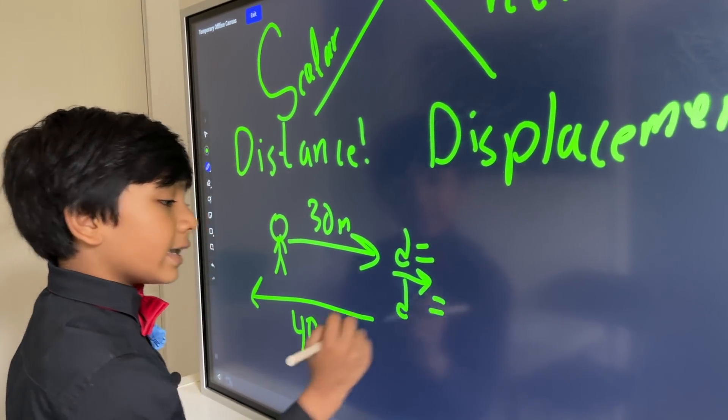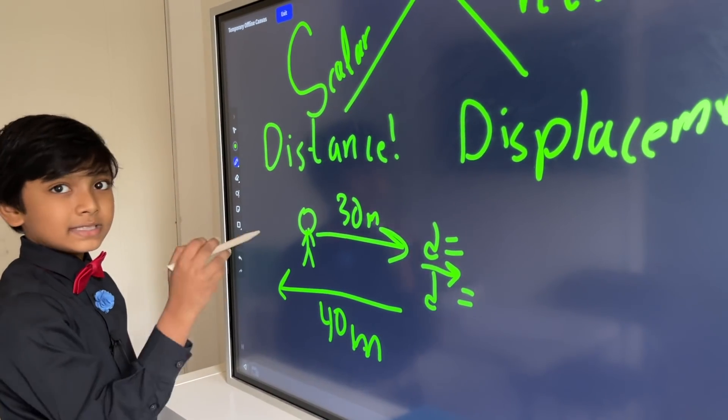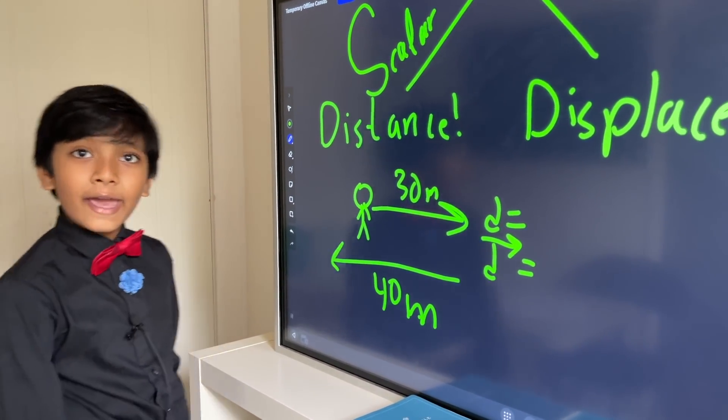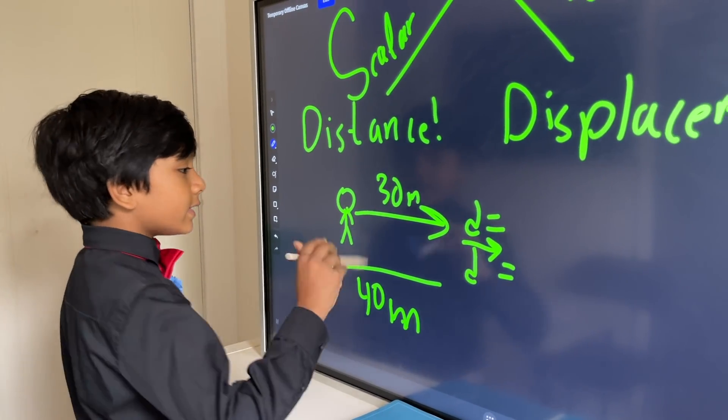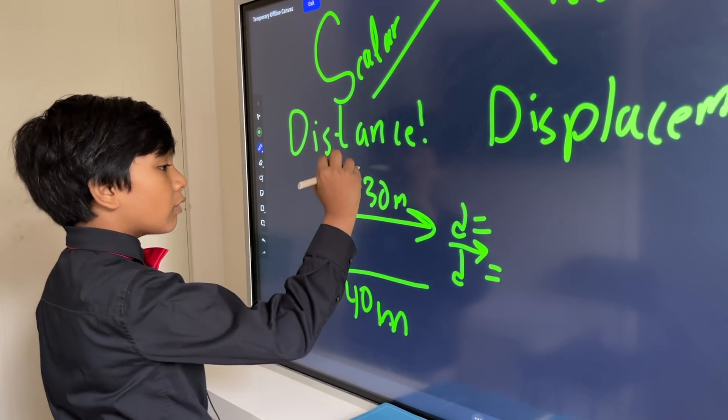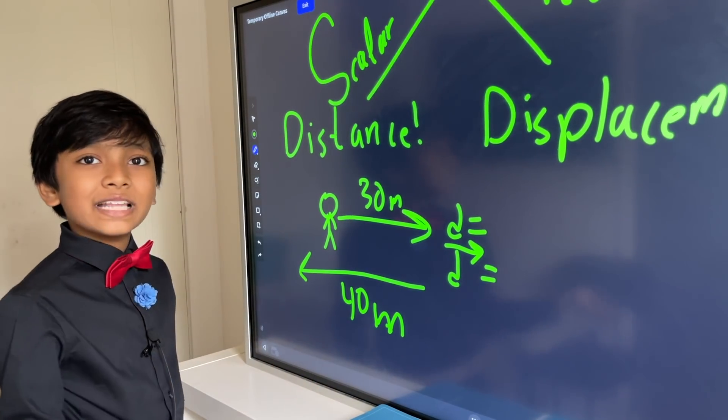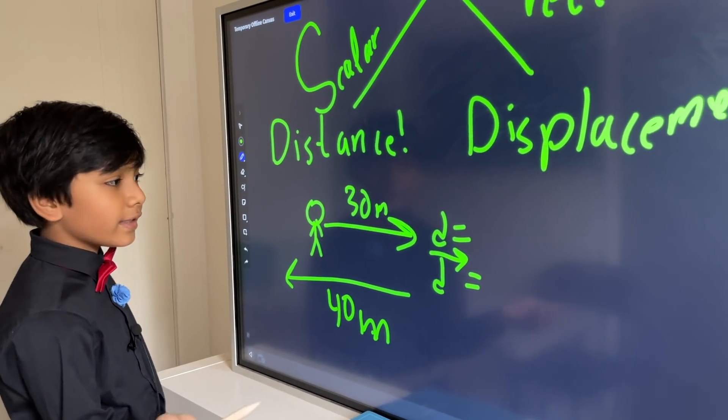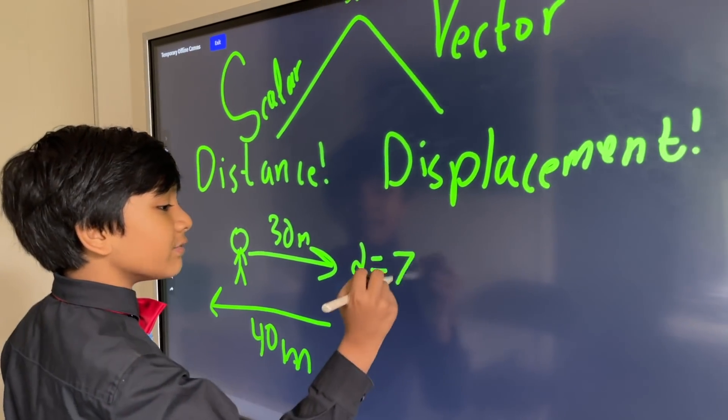By the way, you can indicate that displacement is different than distance by taking an arrow and placing it as a hat on their head. And, anyway, distance that was traveled was 30 meters plus backwards still counts as forwards when you're talking about distance. Because, distance is a scalar. So, 30 plus 40 is 70 meters.